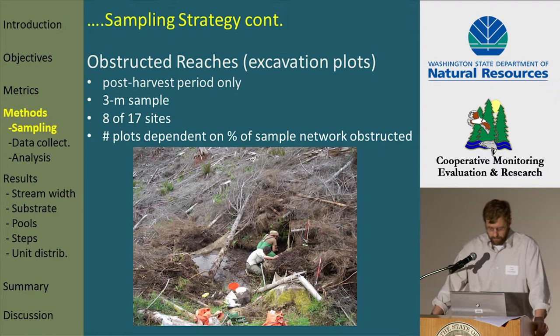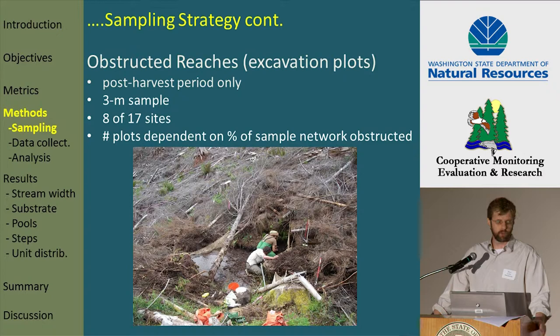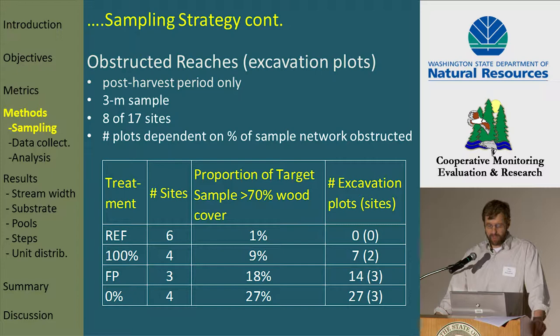After harvest, we did experience pretty heavy wood loading in some areas. We developed a new sampling method — a three-meter excavation plot conducted at some of our sites. The number of plots was dependent on the proportion of the total sample length that was obstructed, or the proportion of the total network that was approximately 70% or greater in total wood cover. As buffer length decreases, the proportion of the target sample with that high wood cover increased more or less in linear fashion, and along with that, the number of excavation plots also increased.